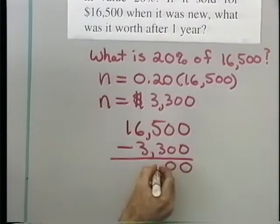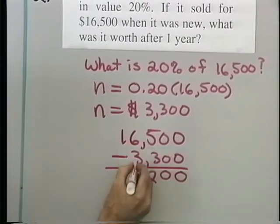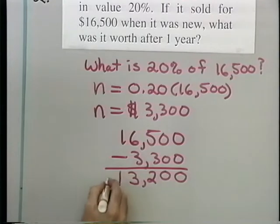0, 0, 3 from 5 is 2, 3 from 6 is 3, and then I have a 1 here. So 13,200,